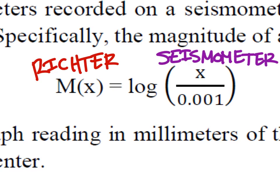So, again, this is the Richter, which is the M of x, or the y if you will, and the seismometer reading would be the x, the actual x which goes inside of this function, M of x.